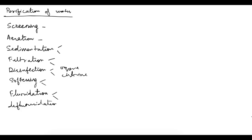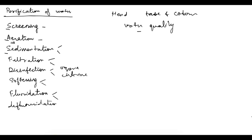We'll see one by one, and after that we'll look at which treatment to apply depending on what is present in excess — for example, if it is hard water, what process should be used, or if taste and color issues are there, we include aeration. In a treatment plant, not all processes are used; we choose based on the water quality.